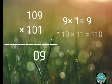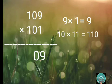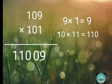Multiply 10 by its successor, that is 11: 10 times 11 equals 110. So the answer is 11,009.